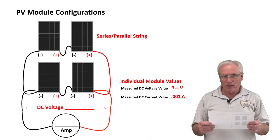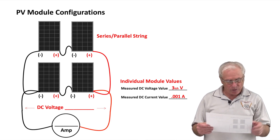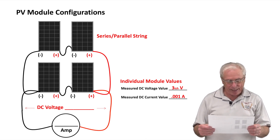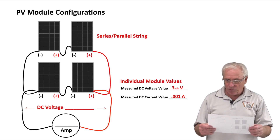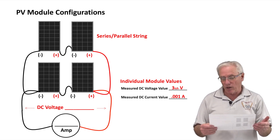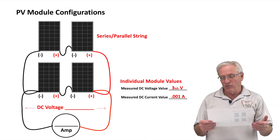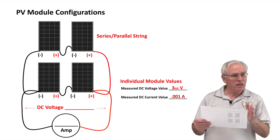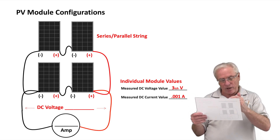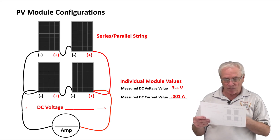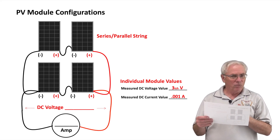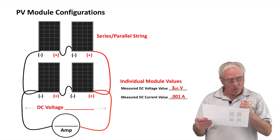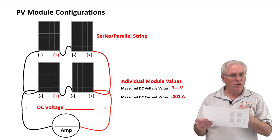Now we'll look at a series-parallel string connection. On screen you'll see four modules: two on top connected in series, two on the bottom connected in series, and then those two series strings connected in parallel. Each module is about 3-ish volts with 0.001 amperes. We should expect about six volts output — each string produces six volts — and the parallel connection should double the current to 0.002 amperes.